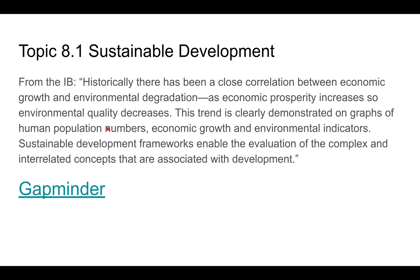This is from the IB and it's really important to understand. Historically, there has been a close correlation between economic growth and environmental degradation — as the economy gets better, the environment gets worse. As economic prosperity increases, environmental quality has decreased. This trend is clearly demonstrated on graphs of human population numbers, economic growth, and environmental indicators. Sustainable development frameworks enable the evaluation of these complex and interrelated concepts.